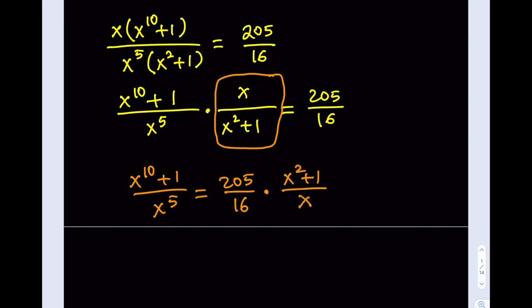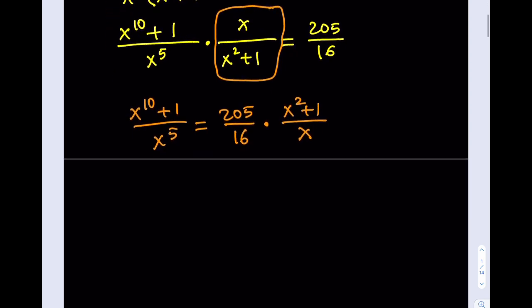What's good about doing all of this: x does not equal 0, and x squared plus 1 does not equal 0 because x needs to be a real number. So we should be good. Next, I'm going to separate these into x to the 5th plus 1 over x to the 5th, and that equals 205 divided by 16 multiplied by x plus 1 over x.